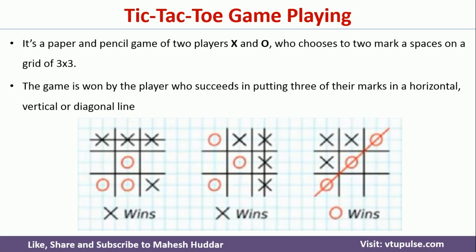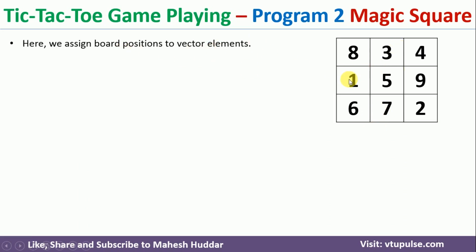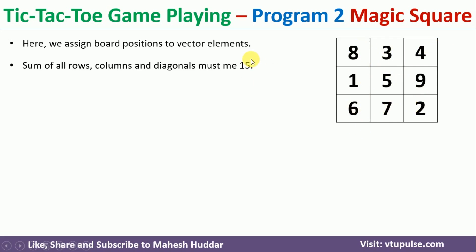That is the basic idea of the Tic-Tac-Toe game. Now we will understand program 2. Program 1 is already discussed and the link for that video is in the description. In program 2, we consider something called the magic square, where we assign numbers to the 3x3 grid such that the sum of each row, column, and diagonal is exactly 15.